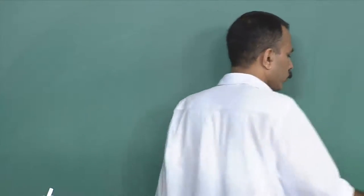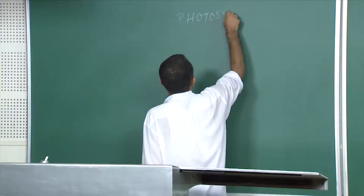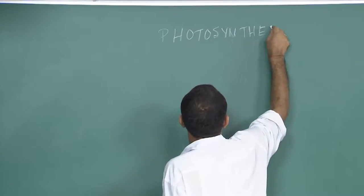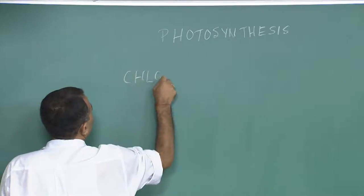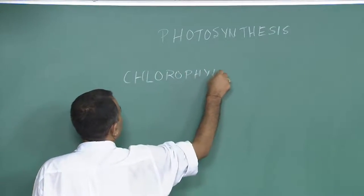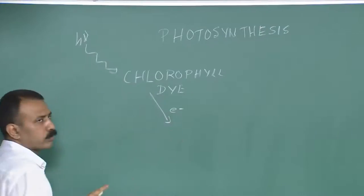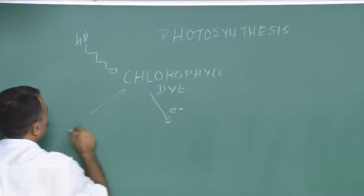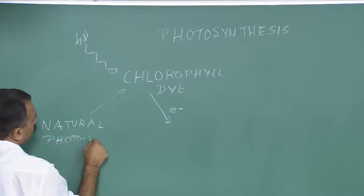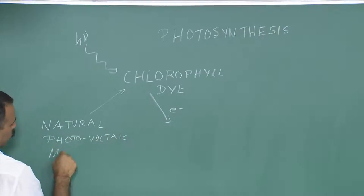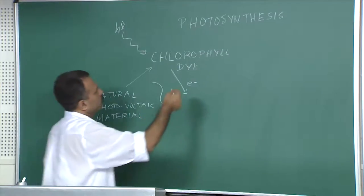A brief recap for those joining this lecture. Talking about photosynthesis from the last two lectures, we observe two major things. One thing we observe is that the chlorophyll dye has the ability to absorb light and eject an electron. Essentially this chlorophyll dye is a natural photovoltaic material, and this is one thing that has inspired generations since we discovered it.